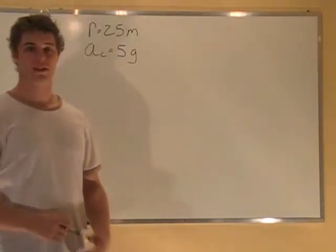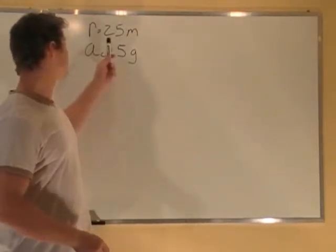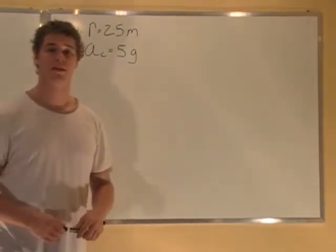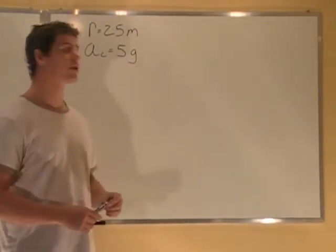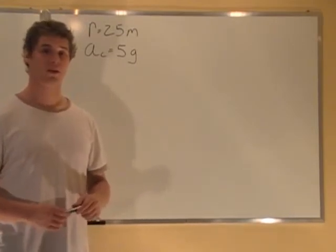A motorcycle is making a very tight turn, and the turn is of radius 25 meters, and the problem says that he undergoes an acceleration of 5 G's as he goes through the turn.